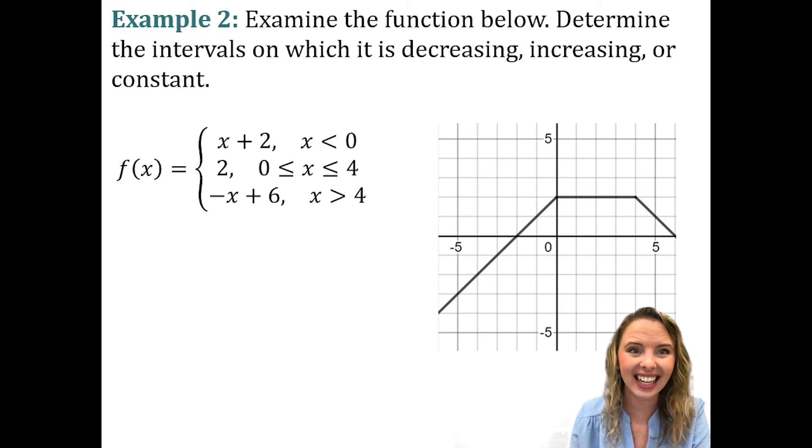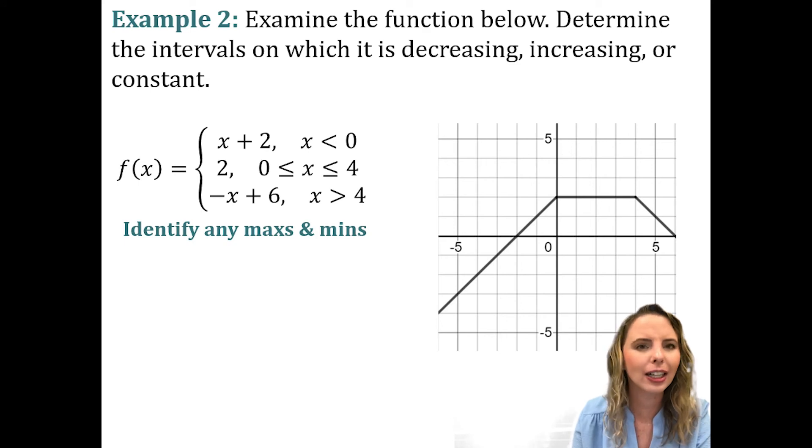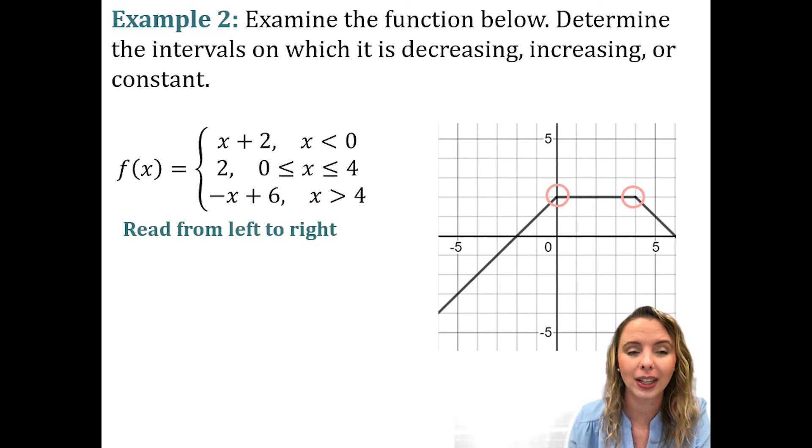Okay. And that was 30 seconds. So, we do know that we need to identify any max and min if they're there. We don't necessarily have max and min in the technical definition. But we do see two turning points here. We see a turning point at zero and at four. We also know that we need to read this graph from left to right. We are reading it from the left to the right and we are going up from negative infinity until we get to zero.